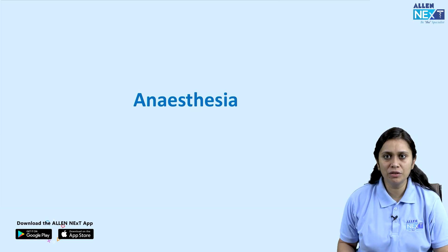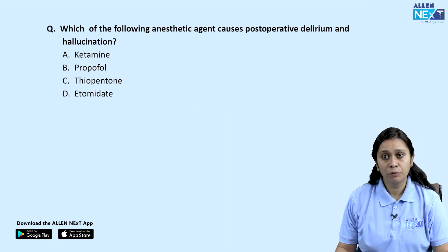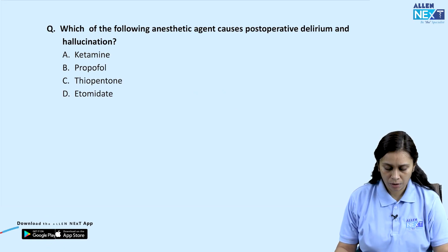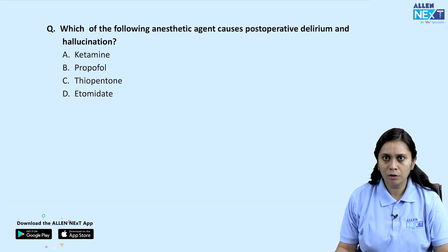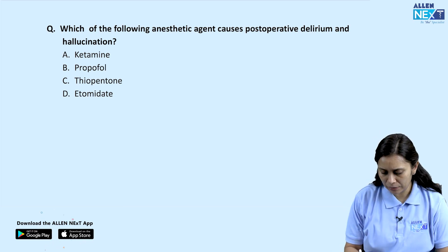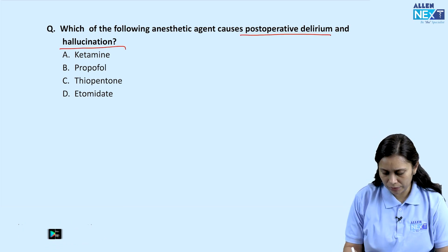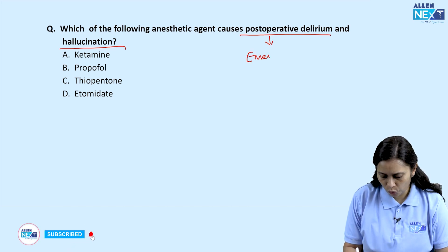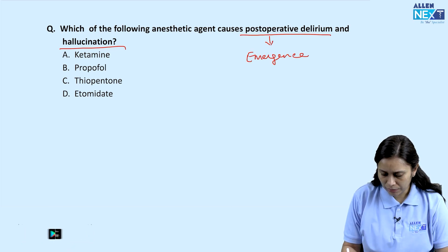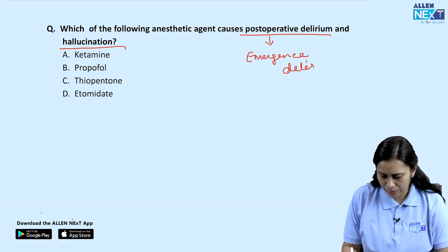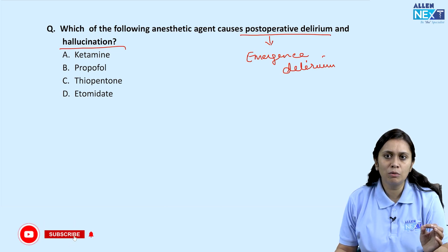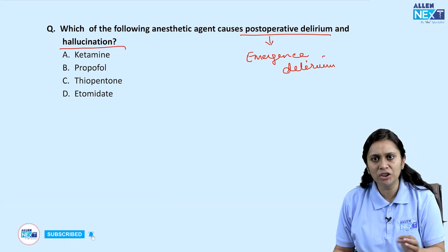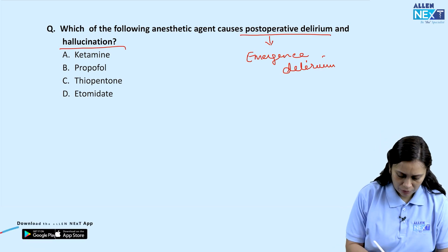Let us discuss a few anesthesia questions from previous exams. Which of the following anesthetic agents causes postoperative delirium and hallucination — also called emergence delirium? The IV anesthetic whose typical post-op complication is emergence delirium is ketamine. So the answer is ketamine.